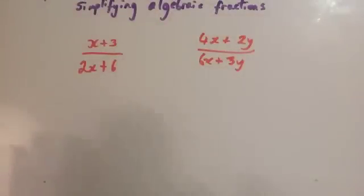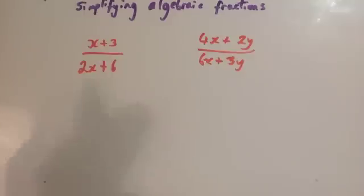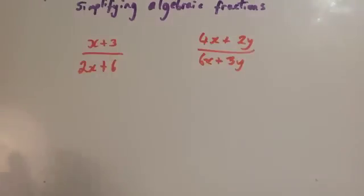Whenever you're simplifying algebraic fractions, my tip is to factorise the top line, or the numerator, factorise the denominator, or whichever one is possible, and then look for things that will cancel out with each other.